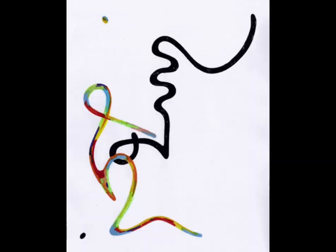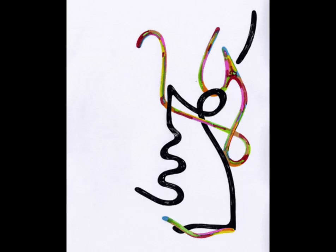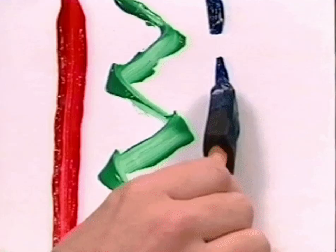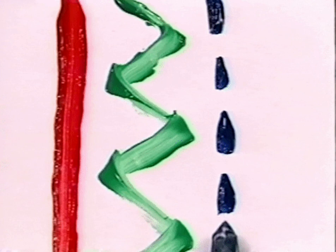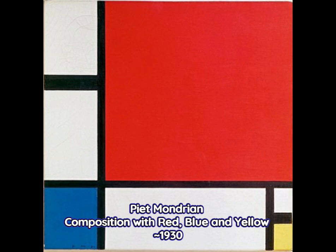The element of line is a fundamental component of art that plays a significant role in creating form, texture, movement, emotion, and depth in a piece of art. Piet Mondrian, a famous artist, created the Composition with Red, Blue, and Yellow, a famous artwork distinguishing thick, bold, and thin lines to make up the shapes of squares and rectangles by using colors to separate the shapes.